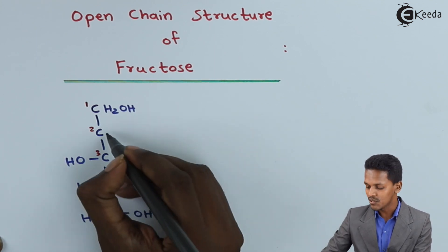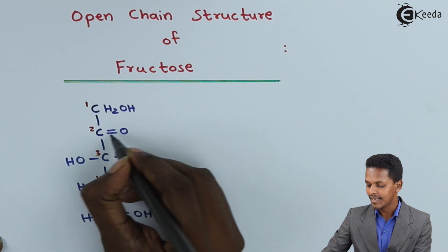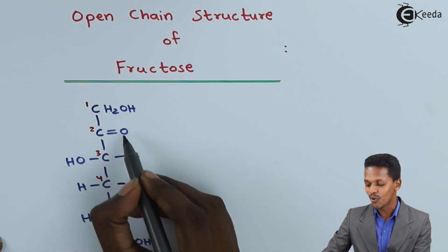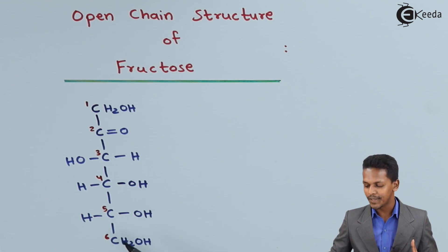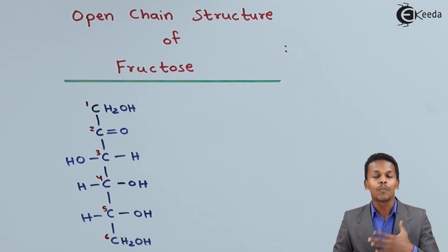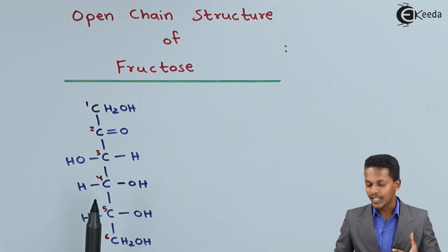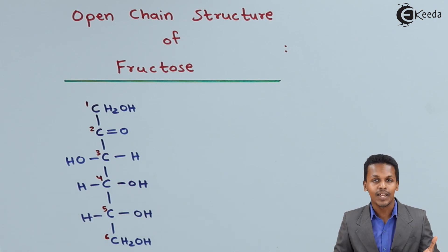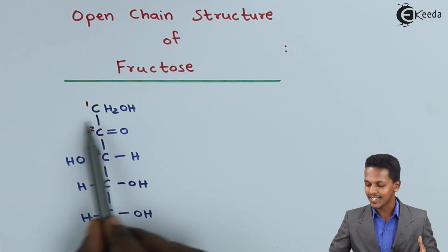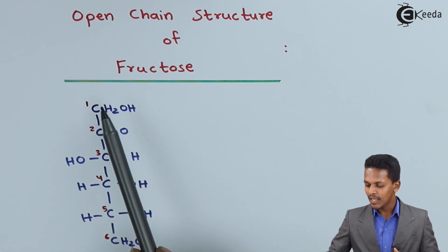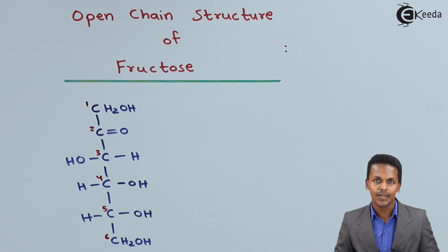Since it is a ketone, we have to mention a carbonyl group, that is C double bond O. So this is nothing but the open chain structure of fructose. Fructose and glucose both have the same molecular formula, but they have different structural formula and different functional groups. Glucose is a polyhydroxy aldehyde, while fructose is a polyhydroxy ketone.